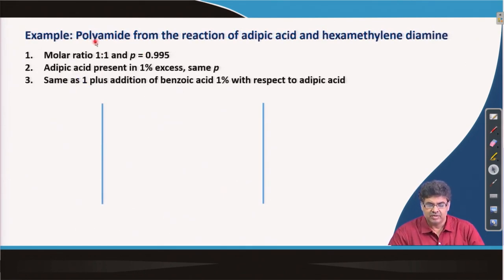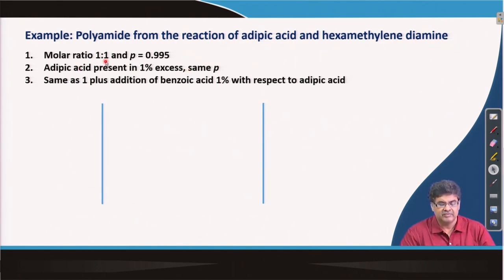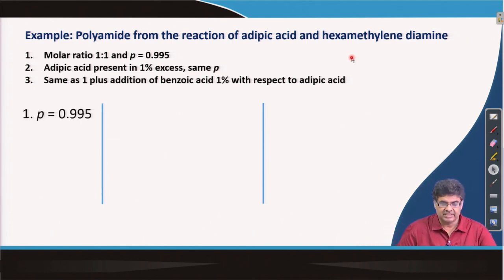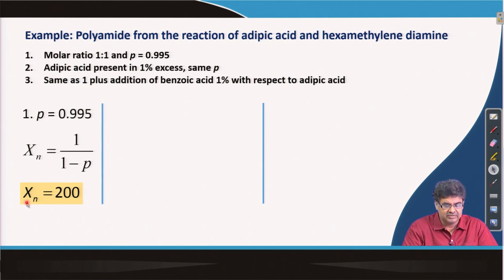Let us give an example: polyamide from the reaction of adipic acid and hexamethylenediamine, with three scenarios. First, molar ratio 1:1 and p = 0.995. Second, one monomer (say adipic acid) in 1% excess with the same p = 0.995. Third, molar ratio 1:1 and p = 0.995, but with benzoic acid — a monofunctional molecule — present as 1% excess relative to the monomers. In the first case, applying the Carothers equation gives X_n = 200.